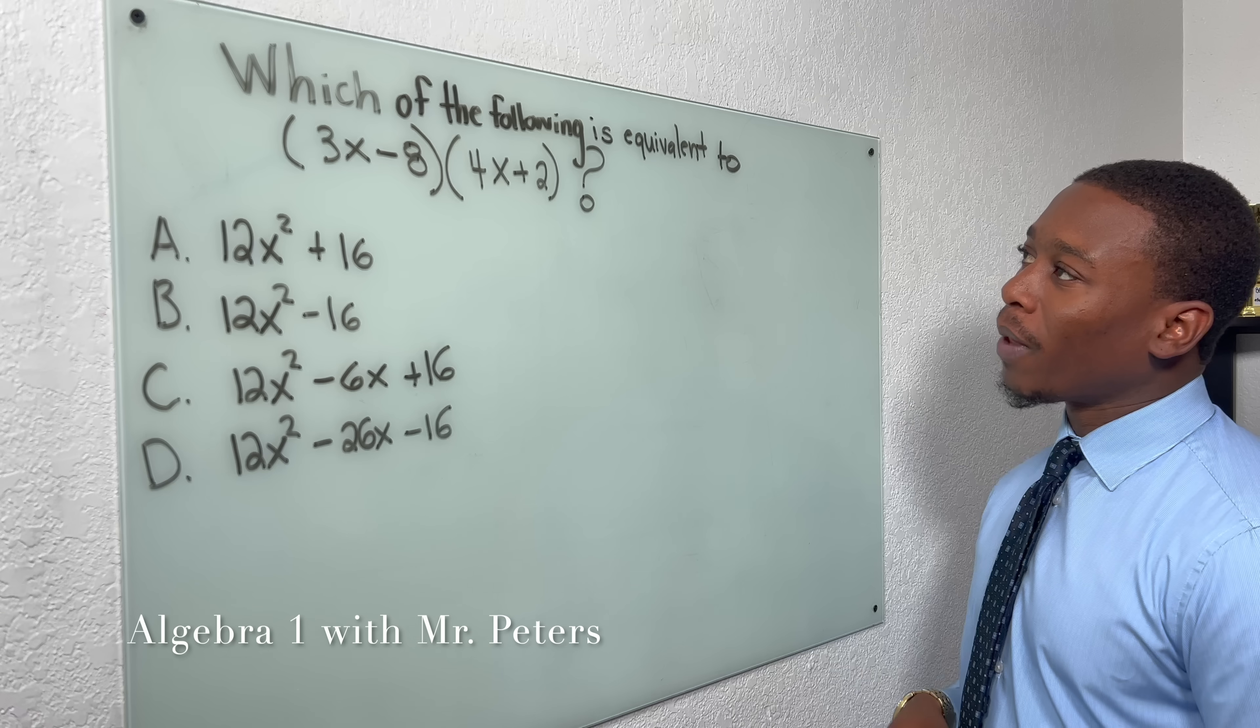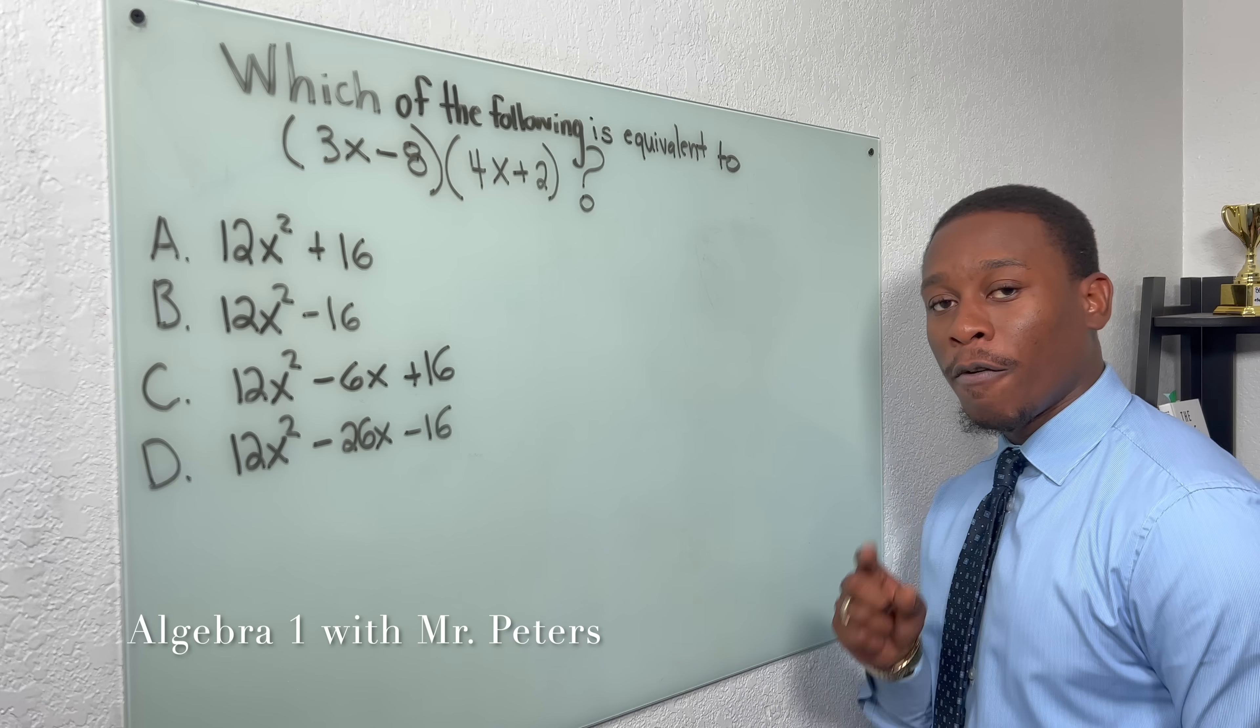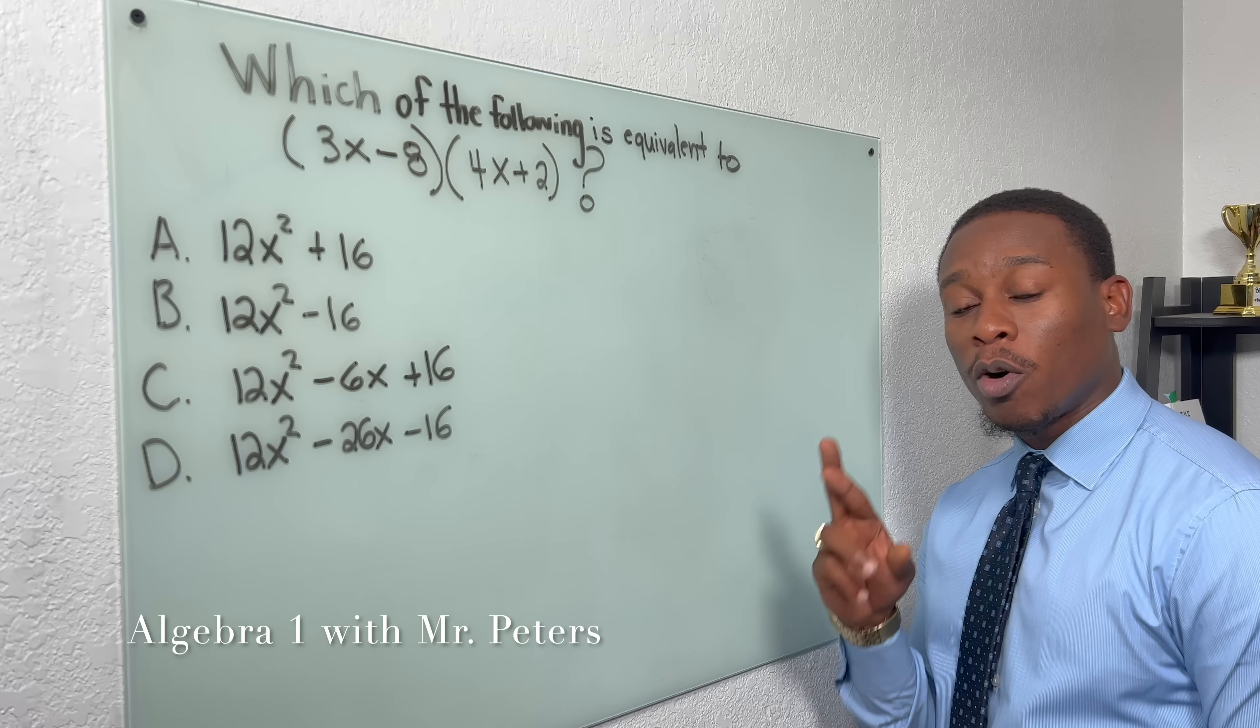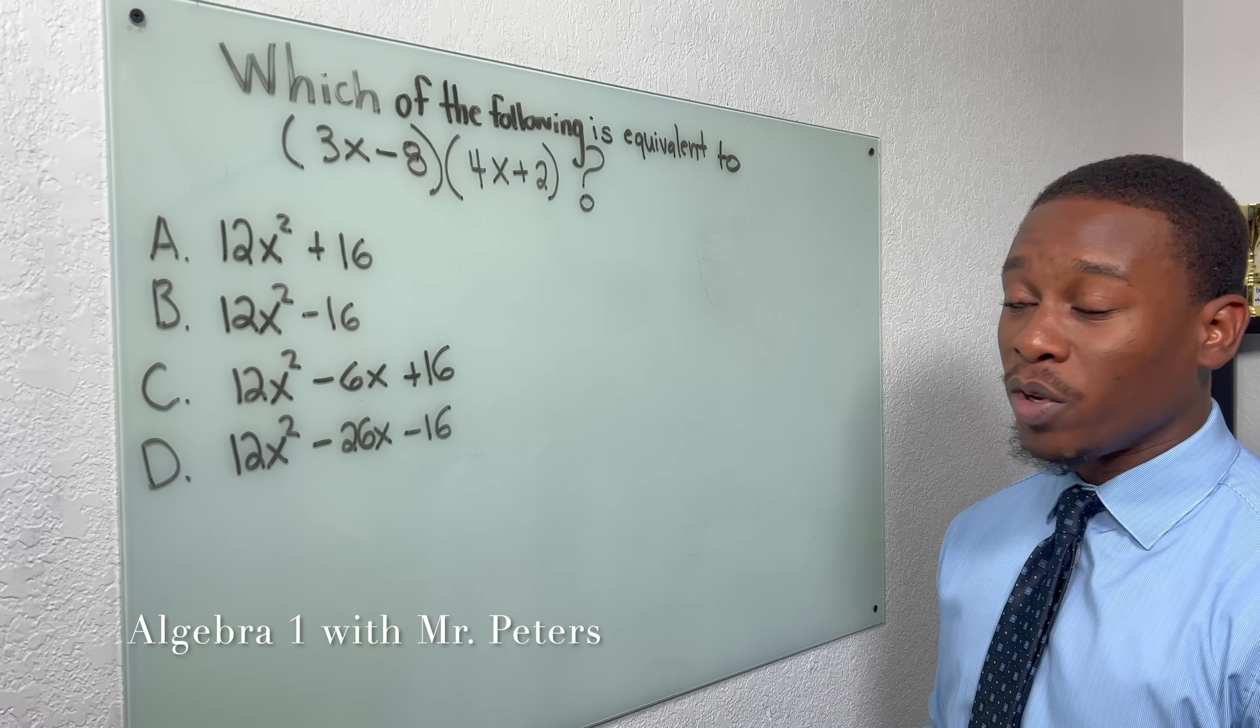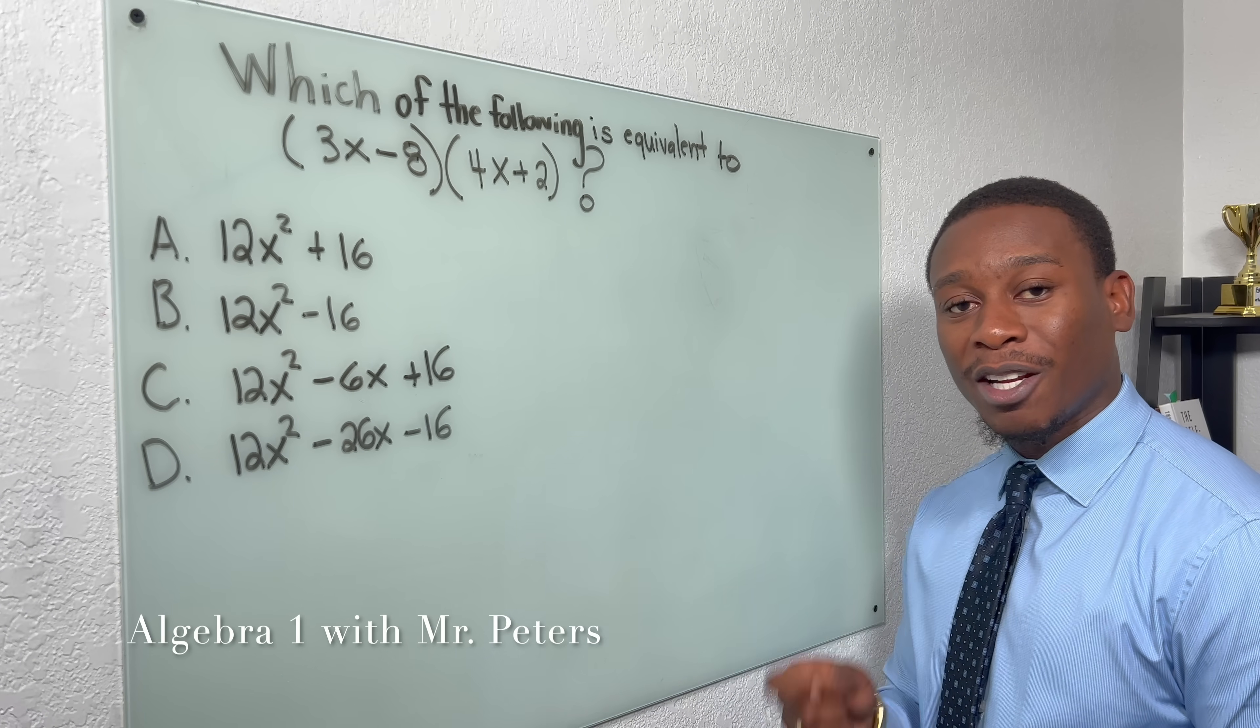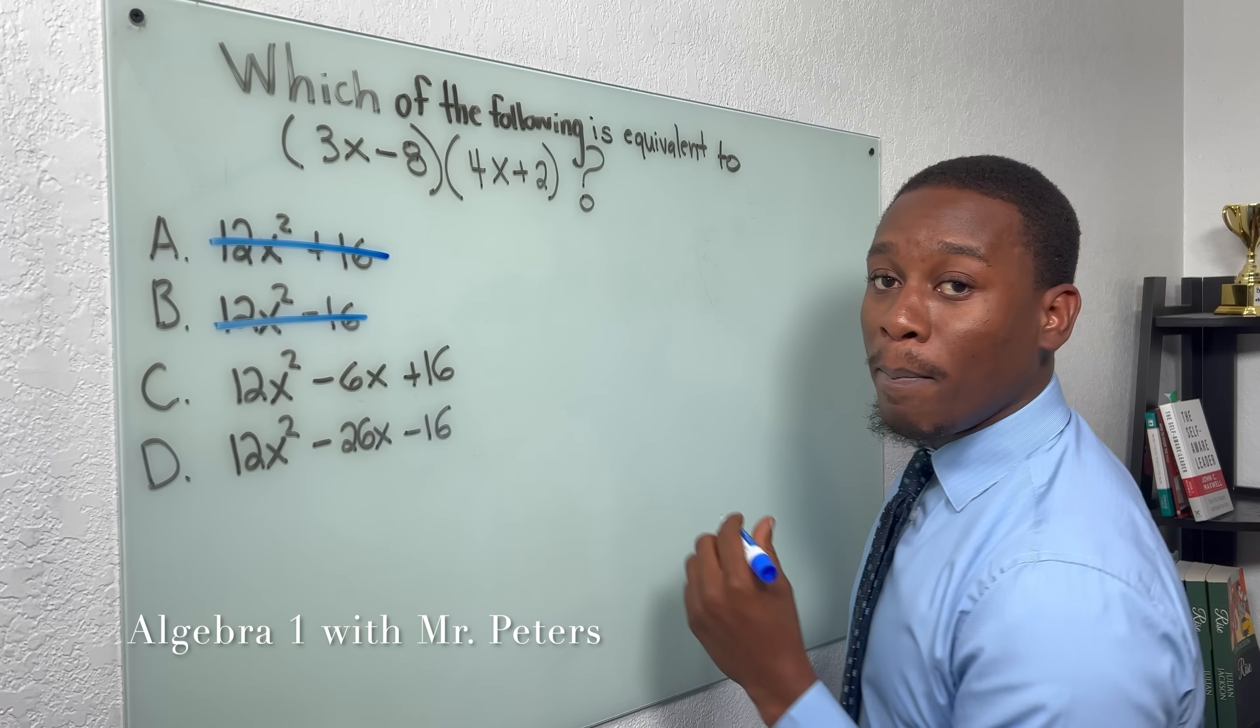So our first problem asks us which of the following is equivalent, and they give us two binomials. First thing we need to know is that when we're multiplying two binomials, our answer will always be a trinomial, unless it's a difference of two squares. So A and B are gone.